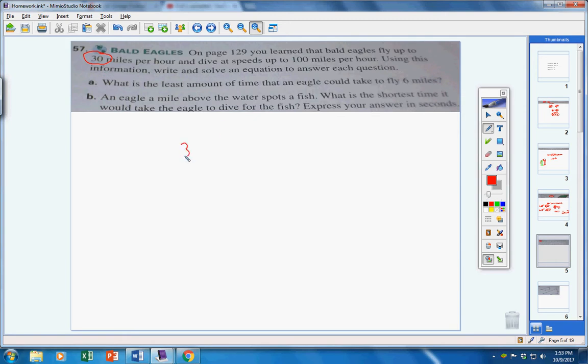That's a rate I can use, 30 miles per one hour. What is the least amount of time that an eagle could take to fly six miles? So, 30 miles, one hour, six miles, x hours. So, 30 times x is 30x, six times one is six. Now, divide both sides by 30. And we get six over 30, reduced to one-fifth. So, one-fifth of an hour is how long it would take an eagle to fly six miles.